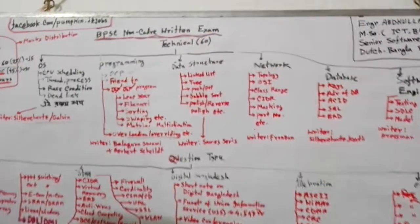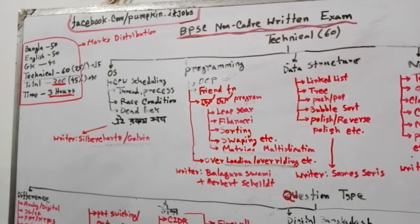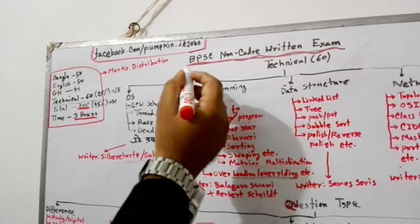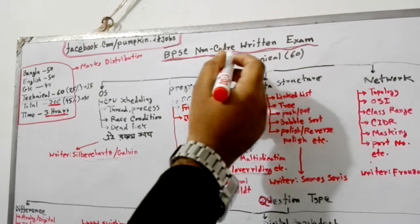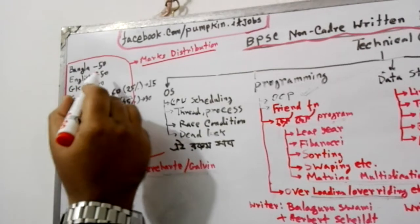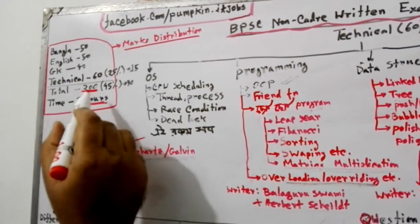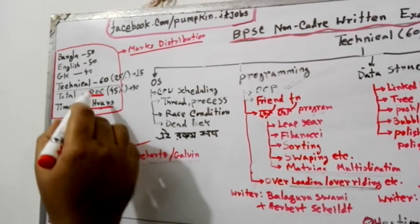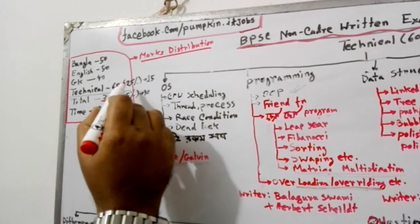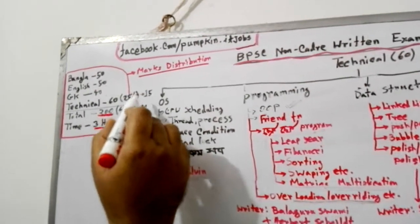So, based on the previous questions that we have analyzed, we are going to do the next guideline. Let's start. First, BPSC is a non-cadal written exam. There is a marks distribution: 50 marks, 55 marks, 60% technical marks. In this condition, we will qualify for the second benchmark and the second test.